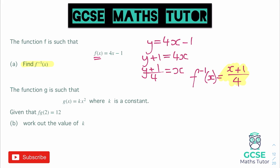So it says here the function g is such that g(x) = kx² where k is a constant. Given that fg(2) = 12, work out the value of k.